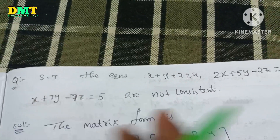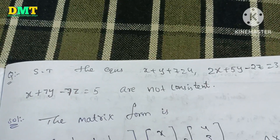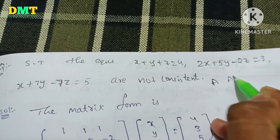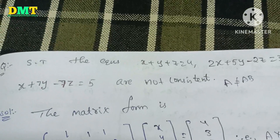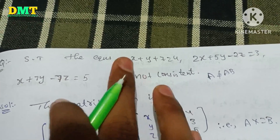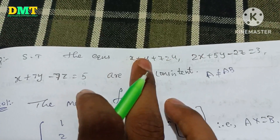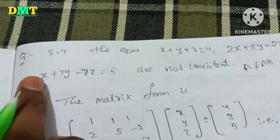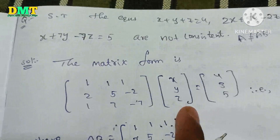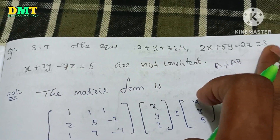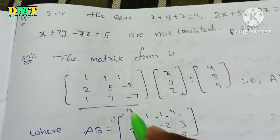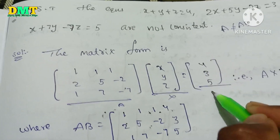Let's show that these 3 equations are not consistent. We write the matrix form. The coefficient matrix A is: row 1: 1, 1, 1; row 2: 2, 5, -2; row 3: 1, 7, -1. The variable matrix x is [x, y, z], and b is [4, 3, 5]. So AX equals b.